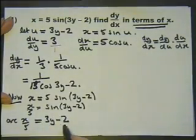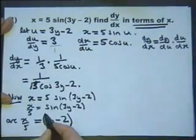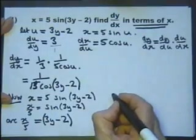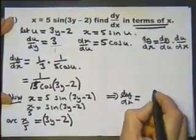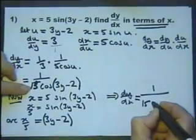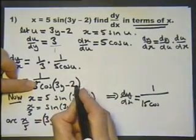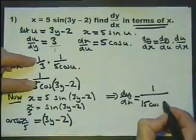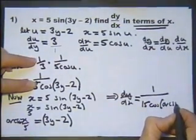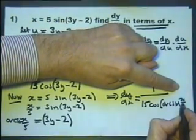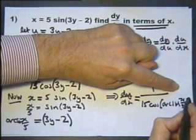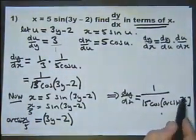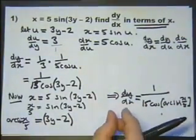We don't actually need to go any further making y the subject, because we can replace 3y minus 2 with this piece of information. So the answer to the question — what is dy/dx in terms of x — is 1 over 15 cosine of arcsin(x/5). There's our answer: 1 over 15 cosine of arc sine of x over 5.